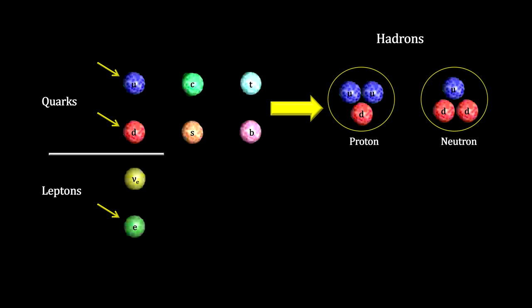Everything we see around us is made of these three stable elementary particles: the electron, the up quark, and the down quark.